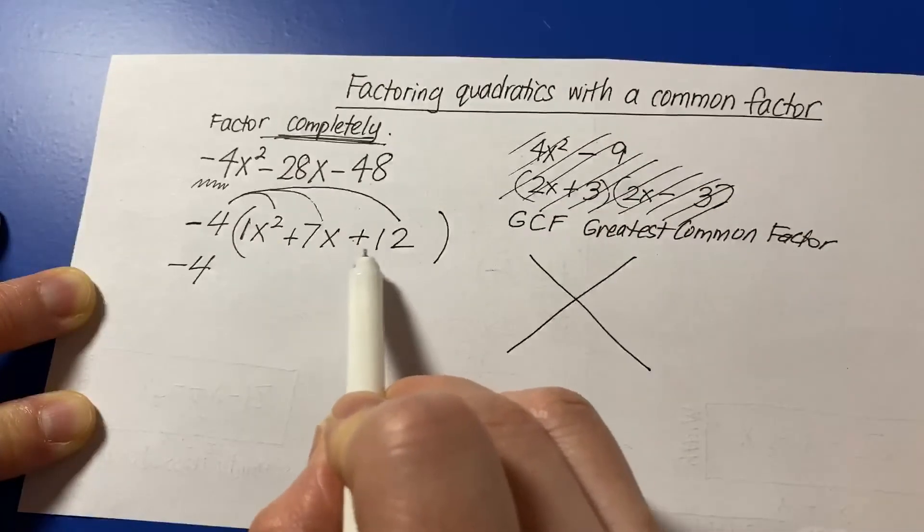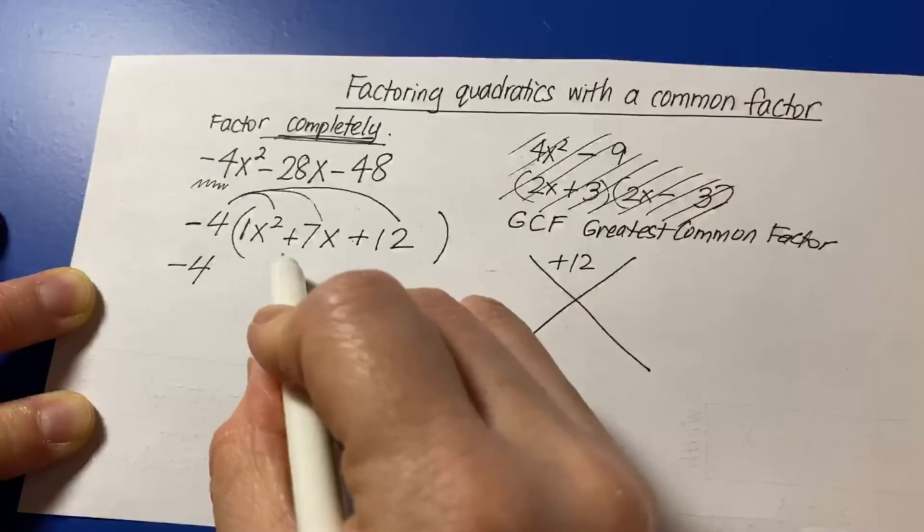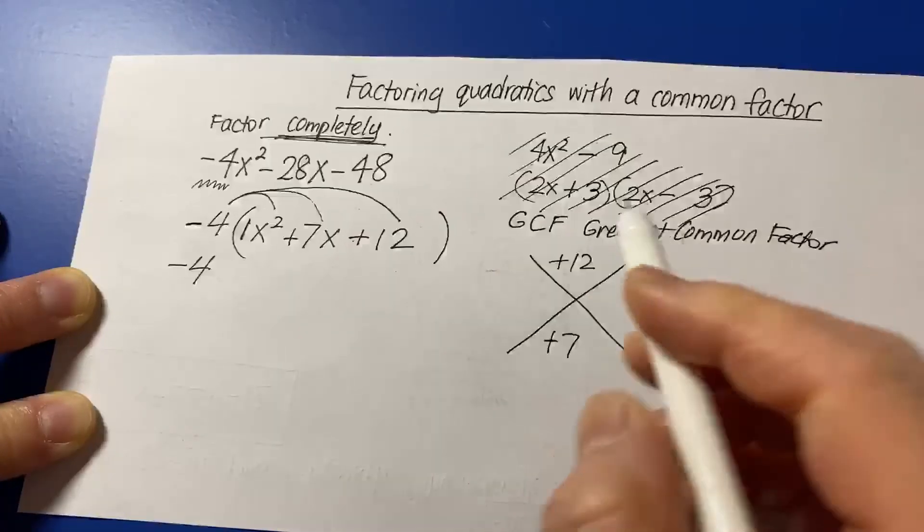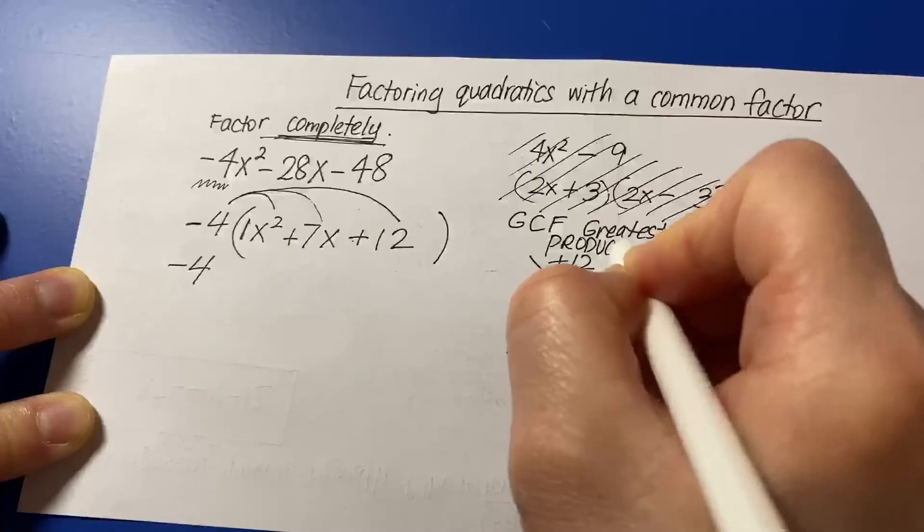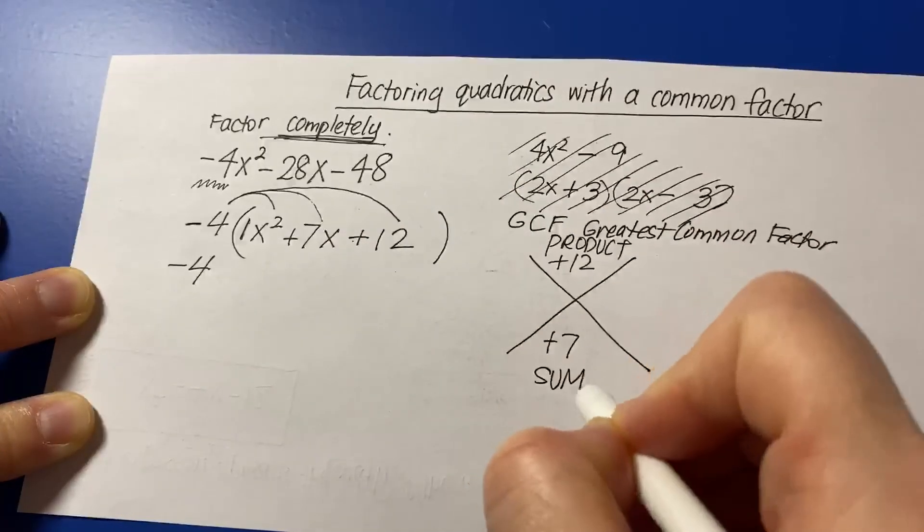So once again, last, top, middle, bottom. Once again, last is the product, middle, bottom, sum.